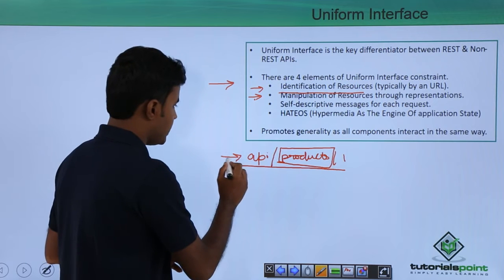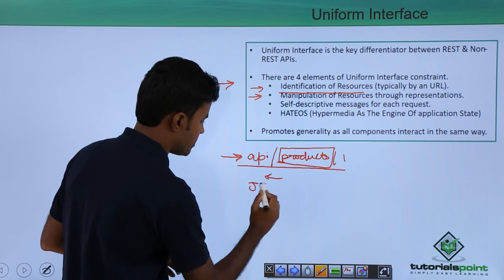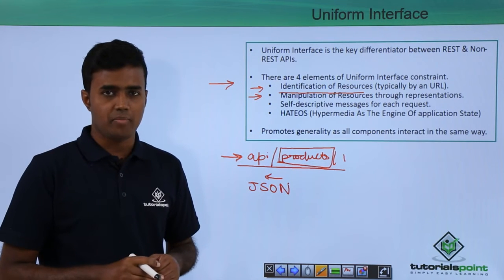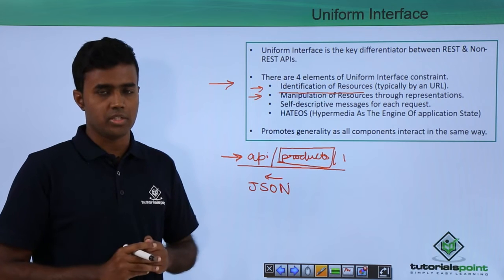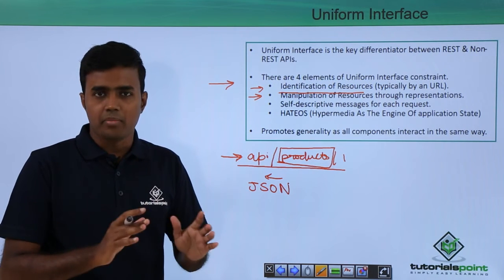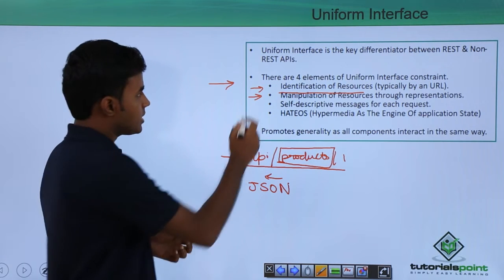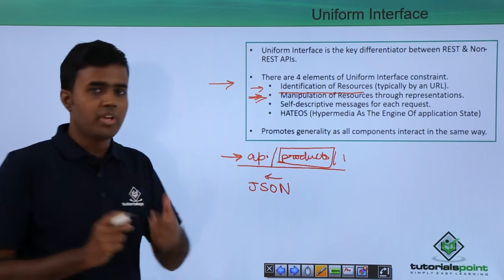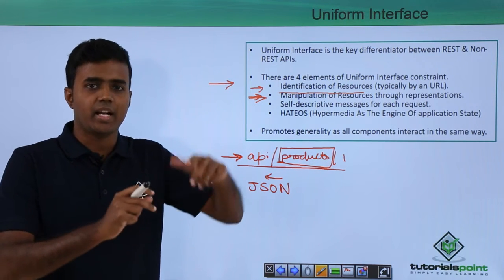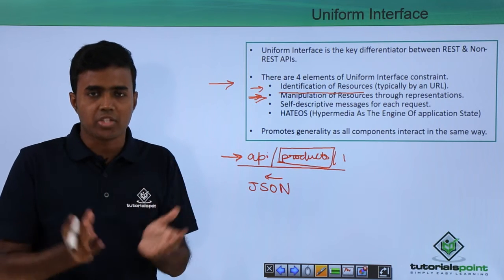The second element is the manipulation of resources through representations. When a client sends a request, it gets a JSON response, and that JSON response is the representation of the resource. All the client has is the representation — it does not have the resource itself. This states that you can change the resource held at the server through the representation that the client requests.